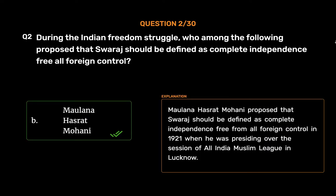Mawlana Hasrat Mohani proposed that Swaraj should be defined as complete independence free from all foreign control in 1921, when he was presiding over the session of All India Muslim League in Lucknow.